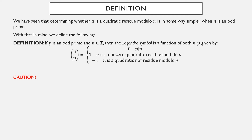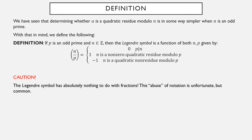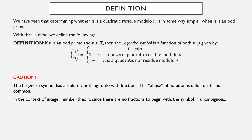Be very, very careful when first working with these things. We are not writing fractions. This is what's called an abuse of notation — using notation for something that already means something else in a different context. This is a common error to make, but we are working in integer number theory, so everything has to be an integer. Since there aren't any fractions in anything we're doing, the symbol isn't really ambiguous. We do have some notation for quotients that also looks like a fraction, but those are square brackets and this is a parenthesis. So in the context of integer number theory, when you see this parenthesis around what appears to be a fraction, it's actually the Legendre symbol.